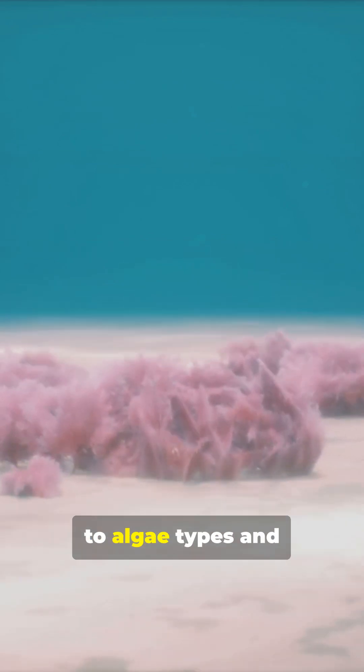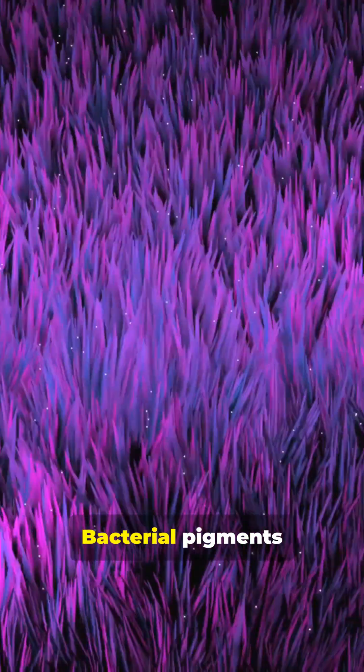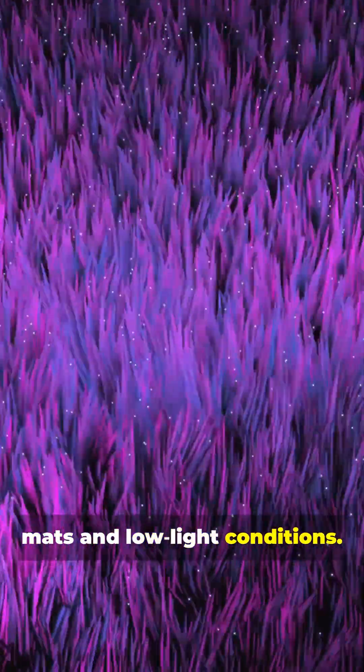Chlorophyll fingerprints point to algae types and light levels. Bacterial pigments hint at microbial mats and low-light conditions.